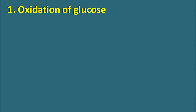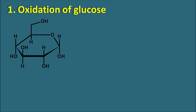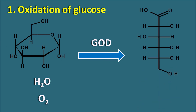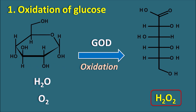Let us start with the first step: oxidation of glucose. Glucose is oxidized using water, which is required for hydrolysis, and oxygen for oxidation. These components react with glucose oxidase enzyme to produce gluconic acid — the oxidized product of glucose — along with hydrogen peroxide. The hydrogen peroxide comes from the oxygen molecule: since glucose undergoes oxidation, the oxygen molecule undergoes reduction by addition of hydrogens, converting it to hydrogen peroxide. For every molecule of glucose, one molecule of hydrogen peroxide is produced.